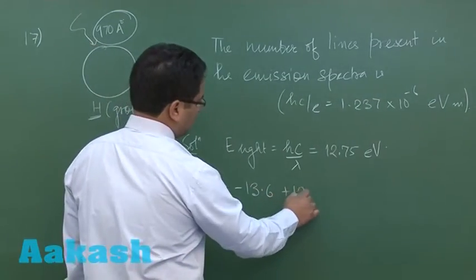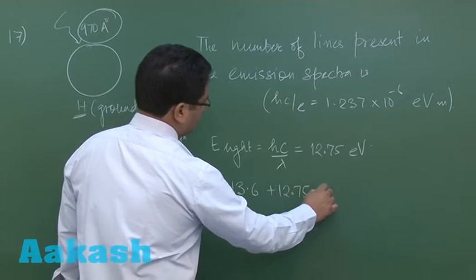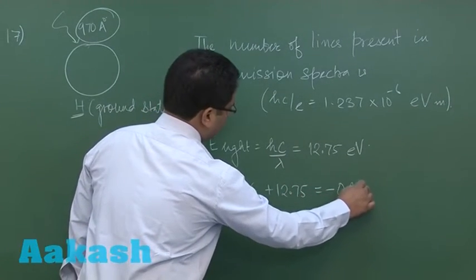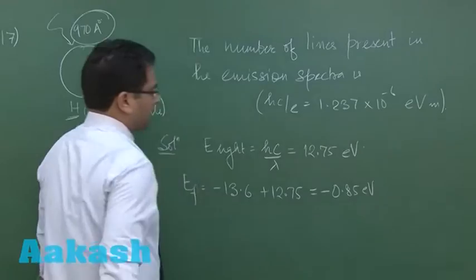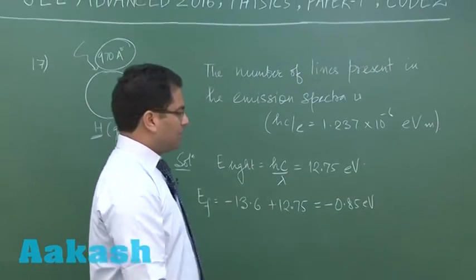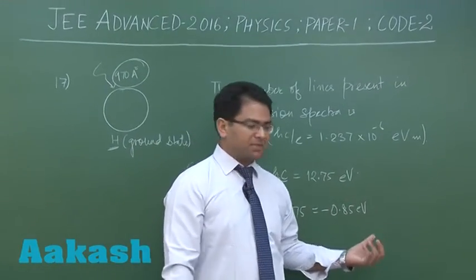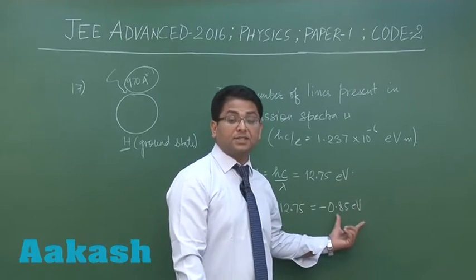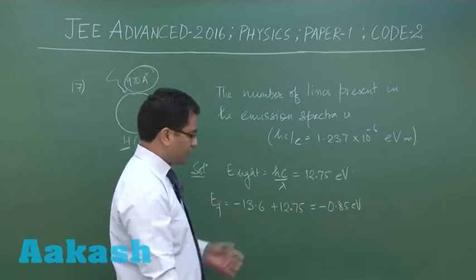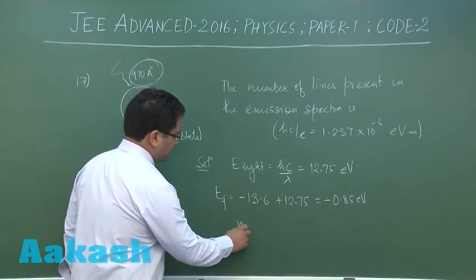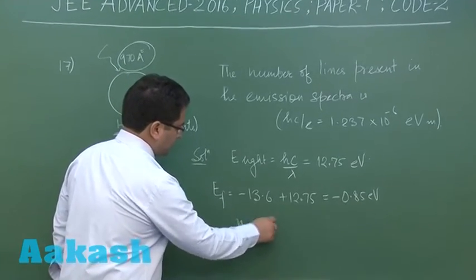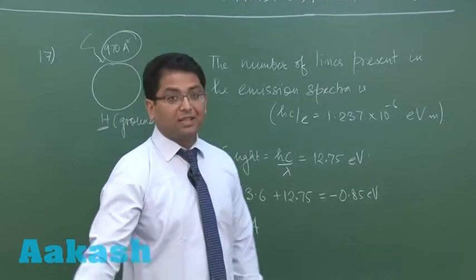At this particular level, this must have been on your fingertips. The moment you see that hydrogen possesses this much amount of energy, it's a very straightforward thing that the value of n would be equal to 4.